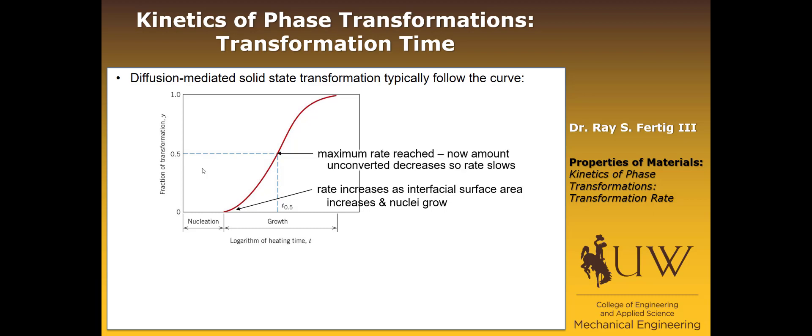And it's going to reach some maximum rate at about when half the transformation has taken place. So what's happening now, though, is that we've already transformed half of the material, so there just isn't as much to continue transforming. And as a result, that rate slows down, and then finally it completes.